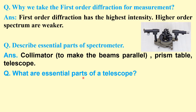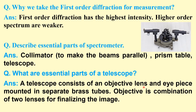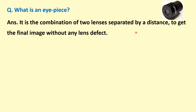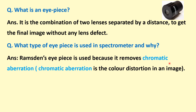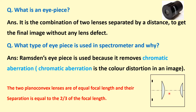What are the essential parts of a telescope? A telescope consists of an objective lens and an eyepiece, mounted in brass tubes. The objective lens is a combination of two lenses. What is an eyepiece? It is a combination of two lenses separated by a distance to obtain the final image without defect. In a spectrometer, a Ramsden eyepiece is used because it removes chromatic aberration. It has two plano-convex lenses with convex sides facing each other, of equal focal length, separated by two-thirds of the focal length.